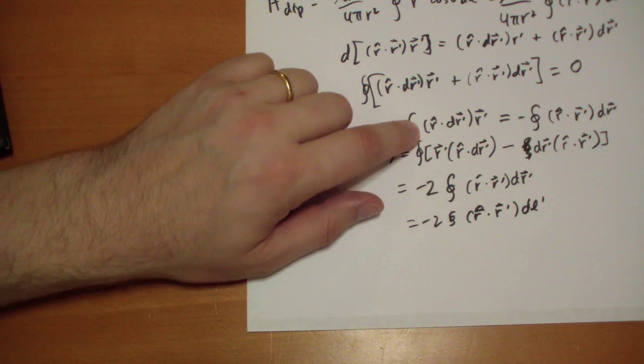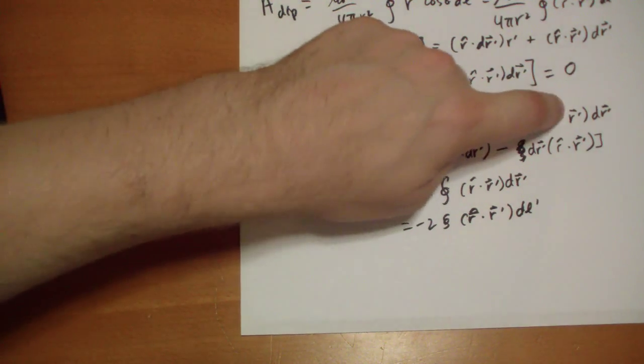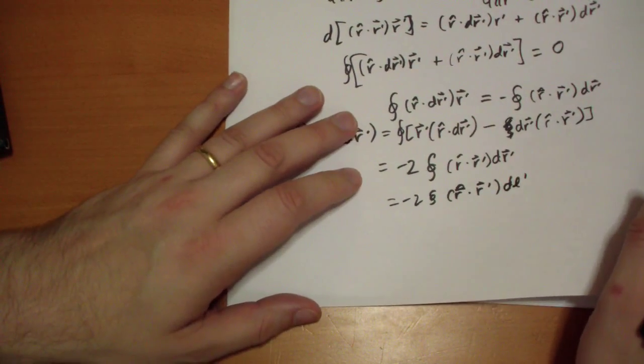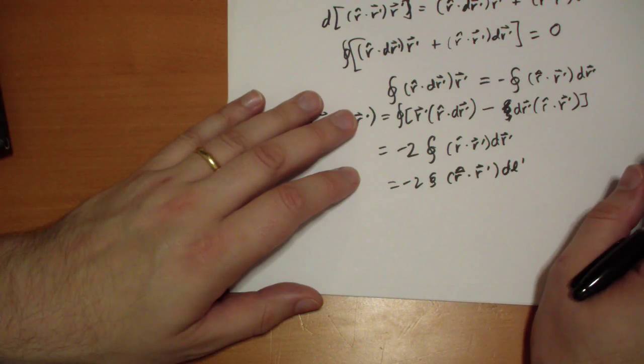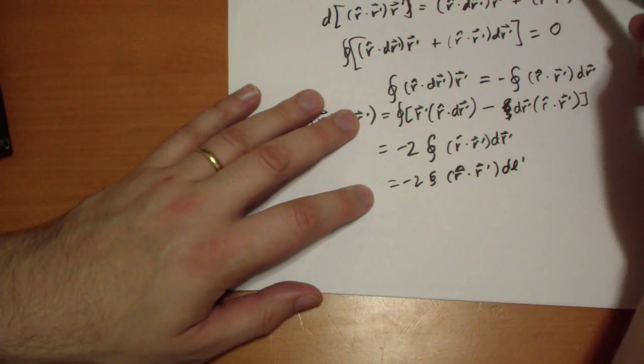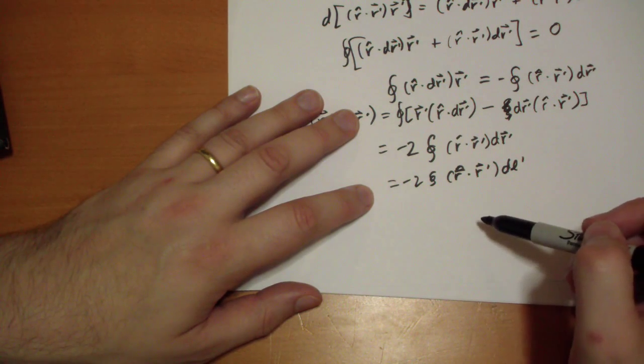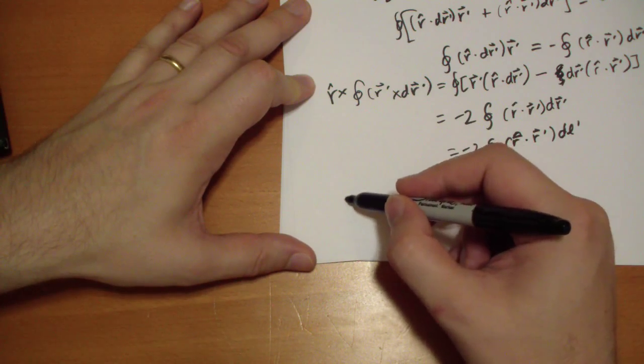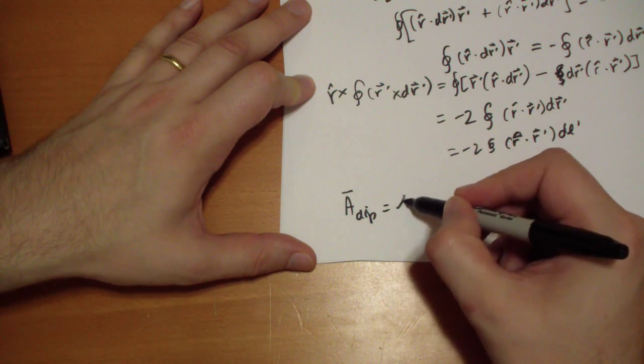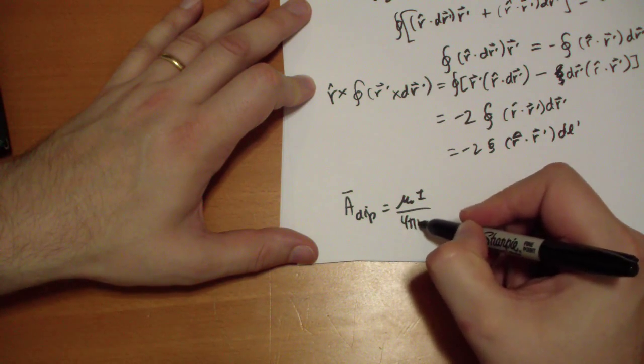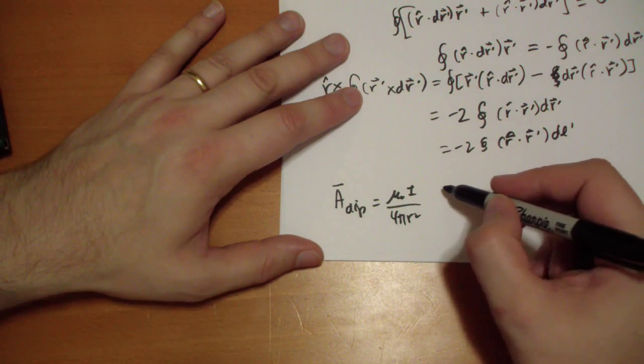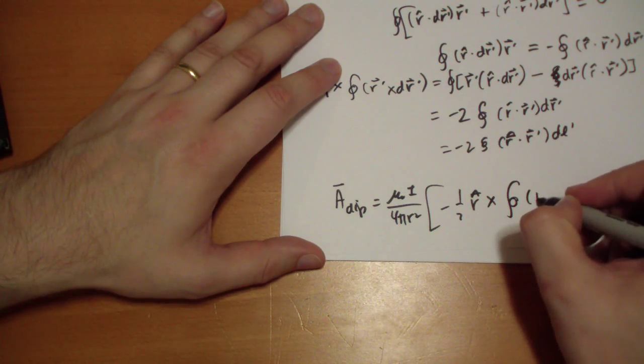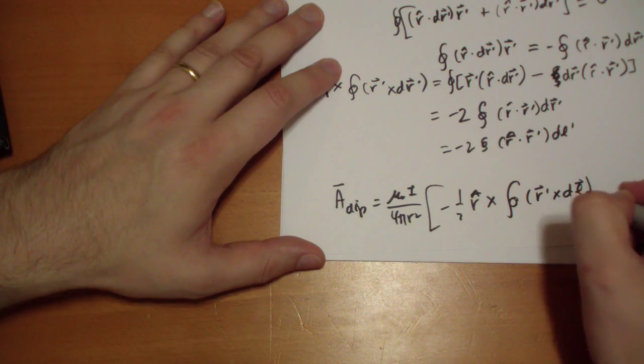See? The r prime over here is just moved to the left. And this guy is equal to negative that, so it's negative two of those. And so, dr prime vector is just the dl vector of this whatever loop we're doing. And so, we get the fancy result that this integral up here is equal to negative one half of this integral here. Well, we can pull out this, of this integral right here. Right? So, we can do this. So, we write this dipole moment as equal to μ₀i over 4π r squared times negative one half of r vector. R hat, cross closed loop integral of r prime vector cross dl vector. Alright.